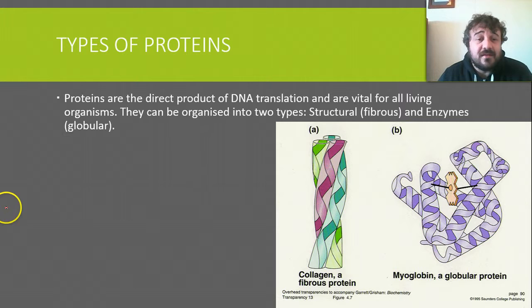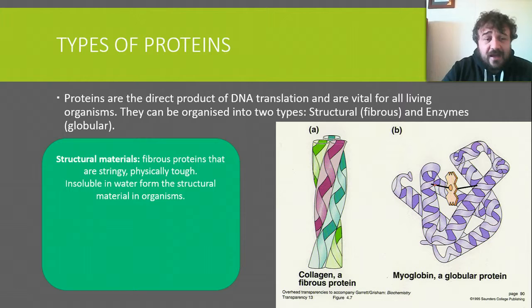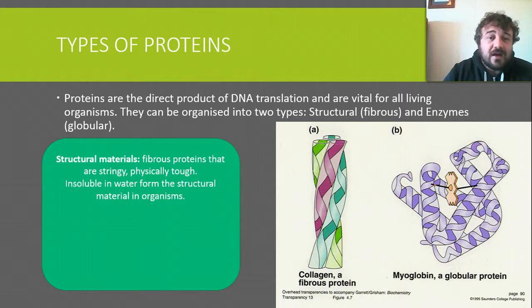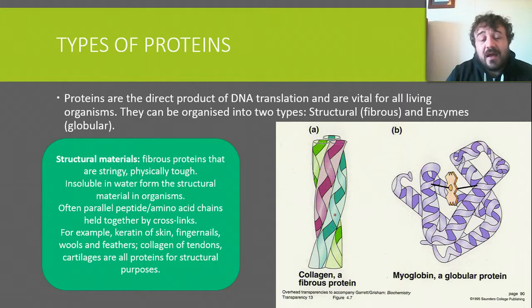Now, there are two types of proteins we're interested in — both the direct product of DNA translation and essential for all organisms. There are structural or fibrous proteins, and there are enzymes, which are globular. Structural proteins are fibrous, streaky, and tough. They're insoluble in water because you don't want them to dissolve in the cell — you want them to make the structure of the cell. Examples include collagen and keratin, found in skin, fingernails, tendons, and cartilage. These are often parallel amino acid chains held together by cross-links, which is actually a quaternary structure.